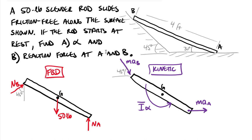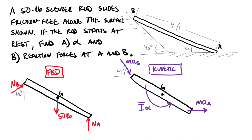We have three different unknowns showing up in these two diagrams: NA, NB, and alpha. One challenge is that we weren't given any of the accelerations — just essentially this 50 pound force driving the acceleration. We also need to develop relationships between alpha and our linear accelerations at A and B, and we need to find the acceleration of the centroid, written as a sub g or a-bar, because we need that in our sum of forces equals mass times acceleration equations from Newton's second law.